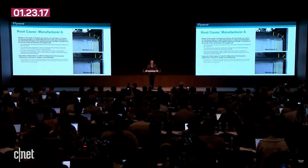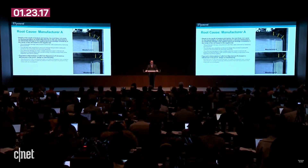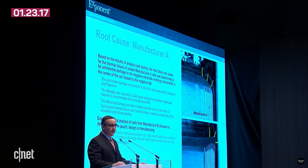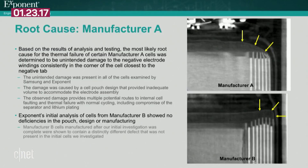Our investigation into root cause for the failure of cells provided by manufacturer A showed that damage to the outermost windings of the negative electrode closest to the negative tab of the cell was the most likely cause for the thermal failures. Through measurement and observation, it was found that the negative electrodes were damaged because the design of the cell pouch did not provide enough room.